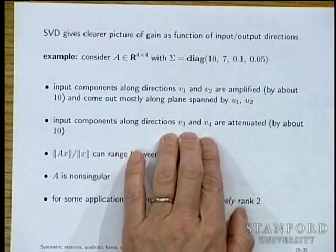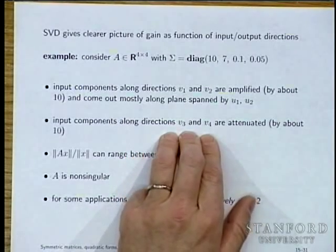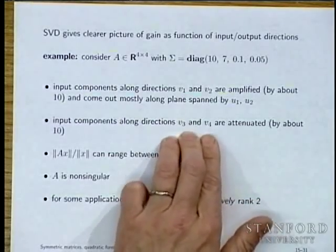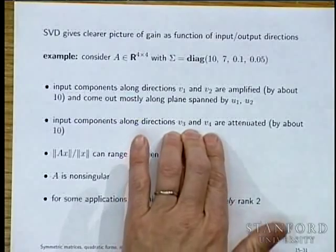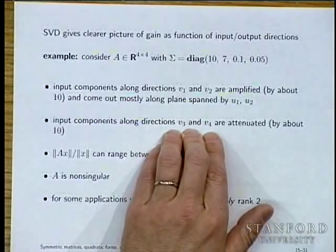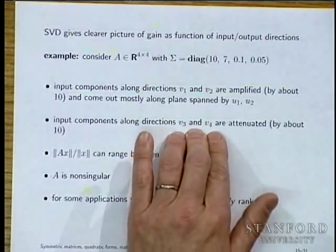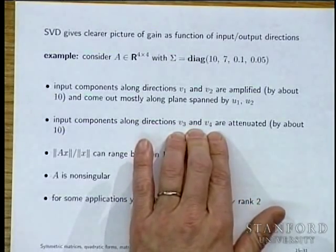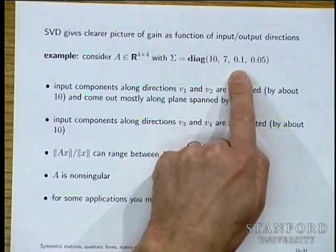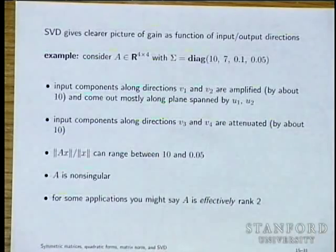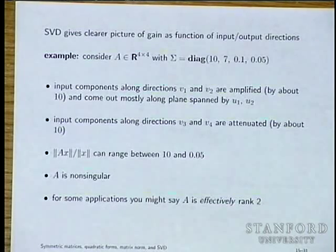At the other side, there is another plane orthogonal to the high-gain plane — a low-gain plane. Inputs in this plane get scrunched by a factor between 0.05 and 0.1, and come out along U₃ and U₄. Depending on the application, you might say A is rank 2 — for example, if those small singular values are below the noise floor.